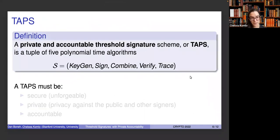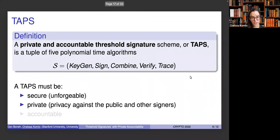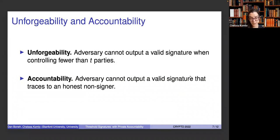More formally, a TAPS is a tuple of five algorithms: keygen, sign, combine, verify, and trace. A TAPS must be unforgeable, like any signature scheme, and it must be private — we differentiate between two privacy notions: privacy against the public and privacy against other signers. And the scheme must be accountable. For unforgeability, we assume an adversary can control up to T minus one signers, and the scheme is unforgeable if the adversary cannot output a valid signature. For accountability, we don't make any assumption on the number of parties the adversary controls, and we say the scheme is accountable if the adversary can't output a signature that traces to an honest non-signer.